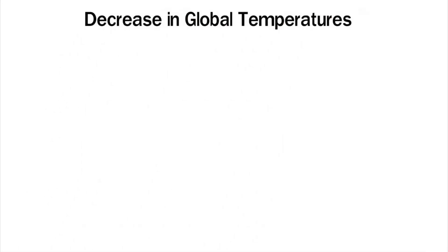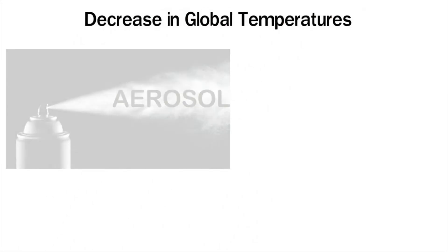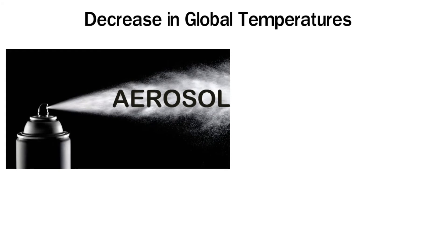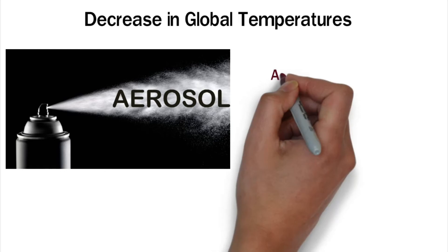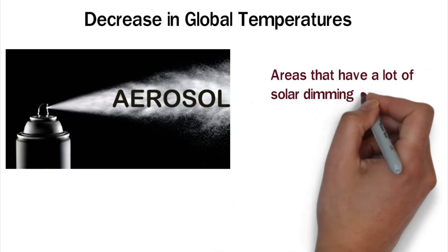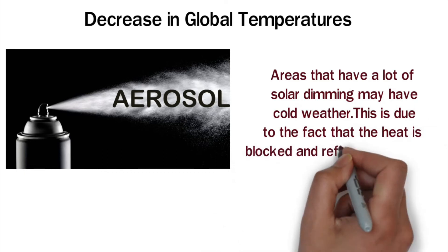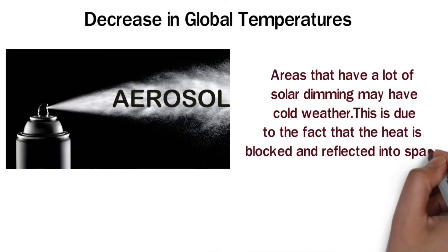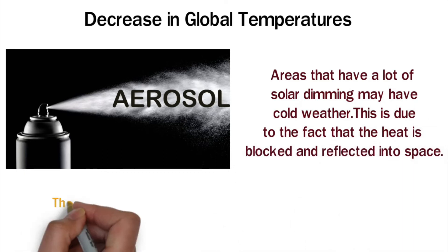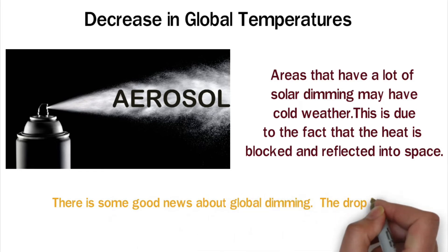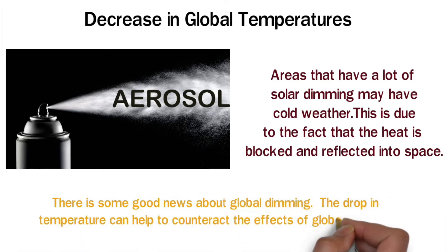Decrease in global temperatures. Aerosols in the air protect the Earth's surface from the sun, which lowers the temperature all over the world. Areas that have a lot of solar dimming may have cold weather, due to the fact that the heat is blocked and reflected into space. There is some good news about global dimming — the drop in temperature can help to counteract the effects of global warming.